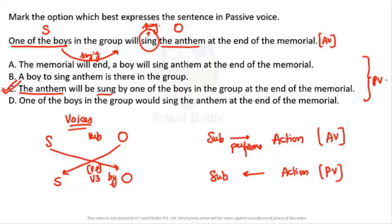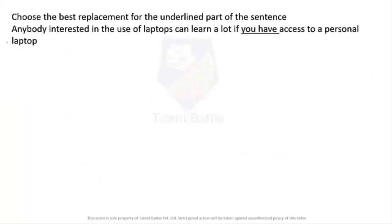To summarize the rules: subject goes to the object's place, object comes to the subject's place, and the verb becomes the past participle. That's how we can easily answer any question on voices without reading the entire sentences, which saves a lot of time.